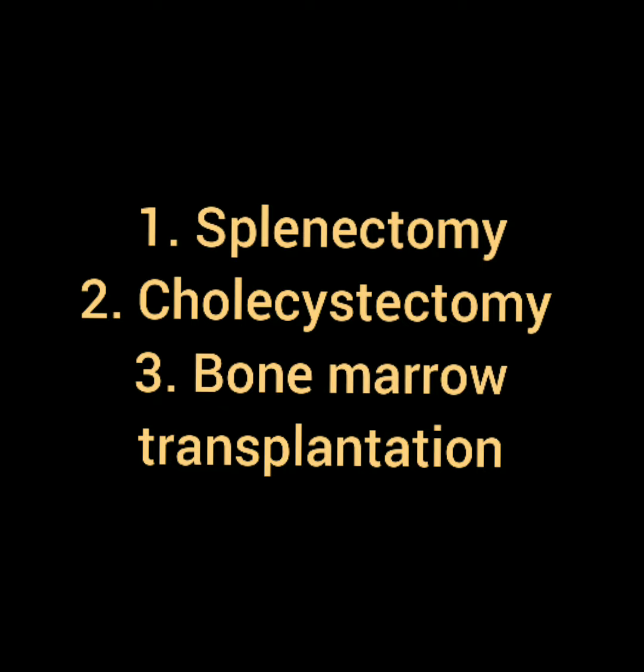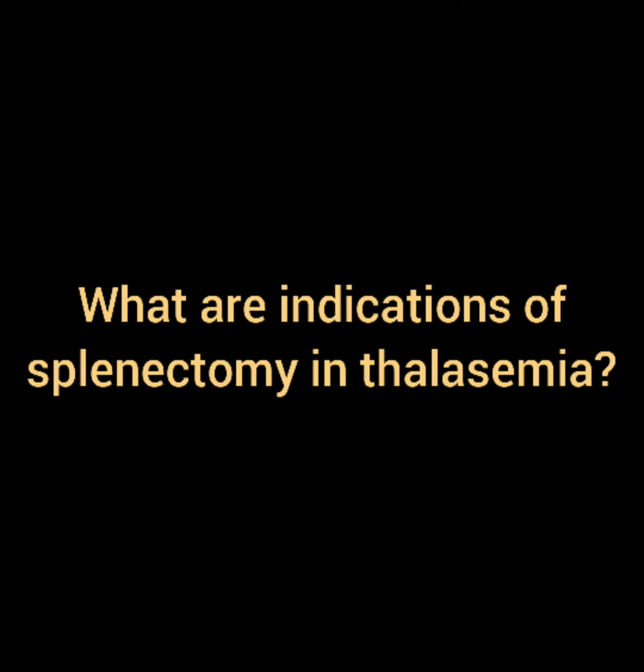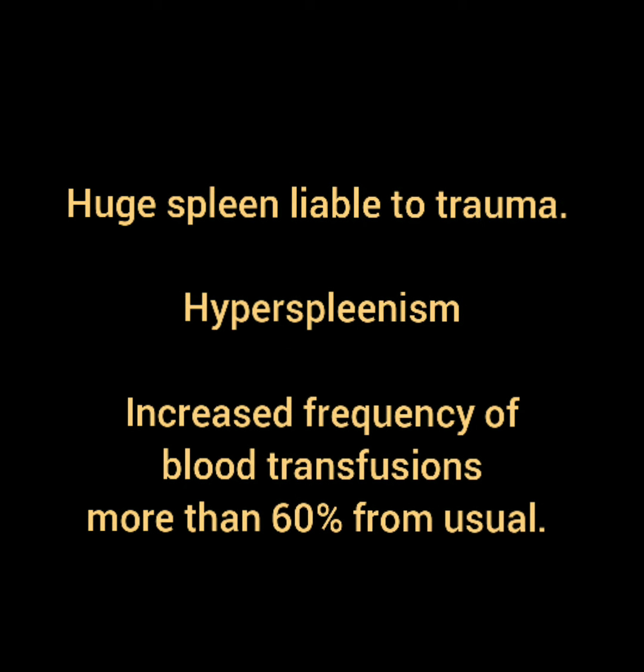What are the indications of splenectomy in a thalassemic patient? The indications are: a huge spleen liable to trauma, hypersplenism, and an increased frequency of blood transfusions — more than 60% from the usual requirement.